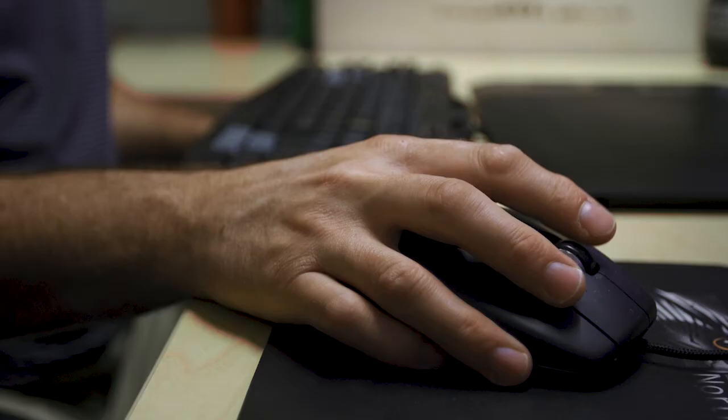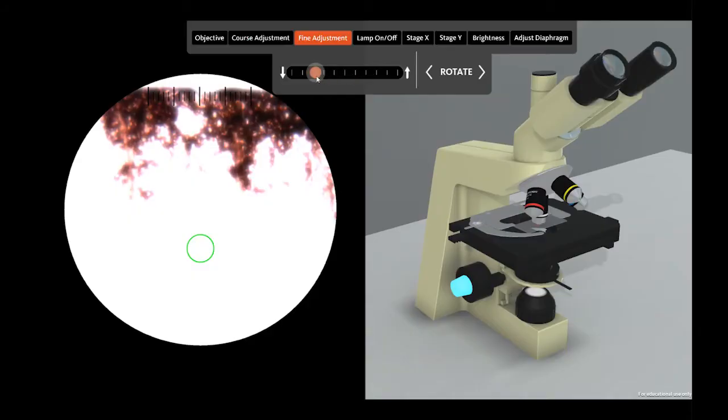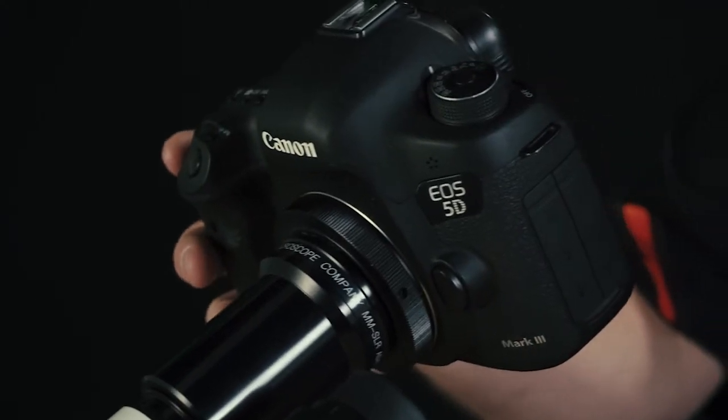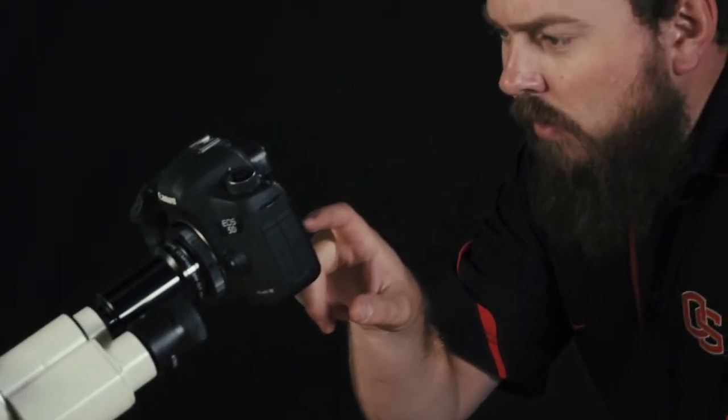Once we had the 3D model completed I put it into our game development software to animate, program the user interface buttons and the functional components of the microscope so that the student could change the brightness, the magnification, focus and all the other controls. Then we took photos of the slides we wanted to use through the view of a real microscope and programmed those to create the virtual simulation.